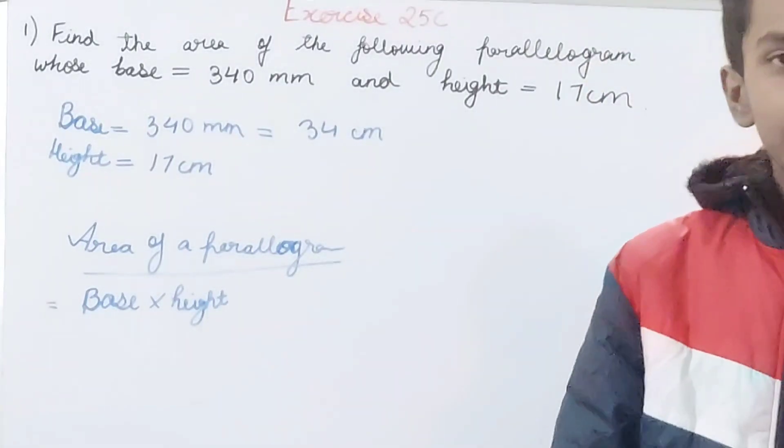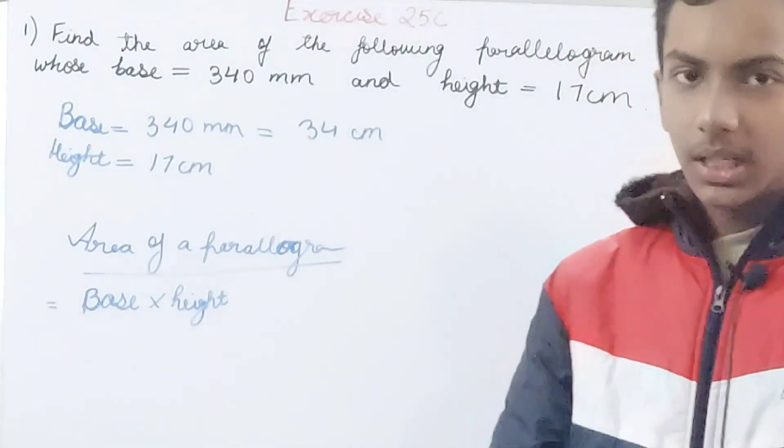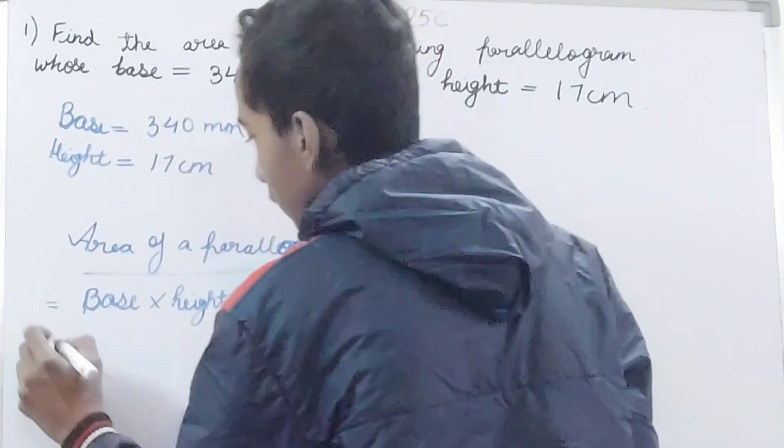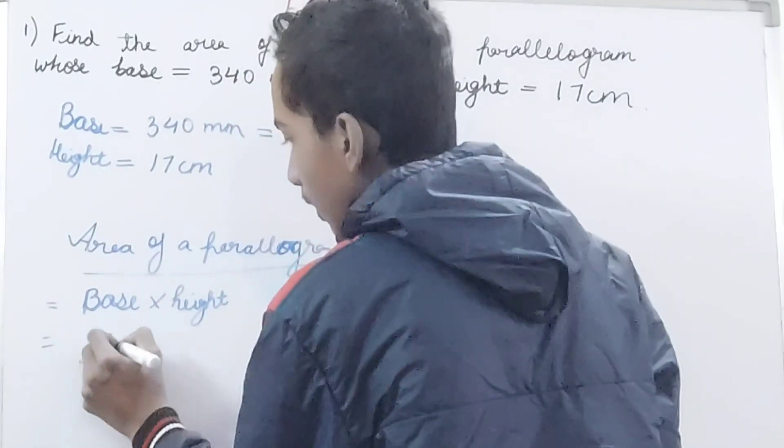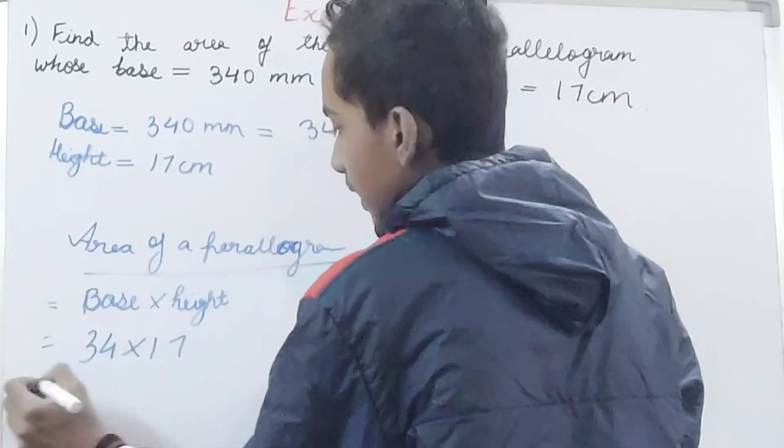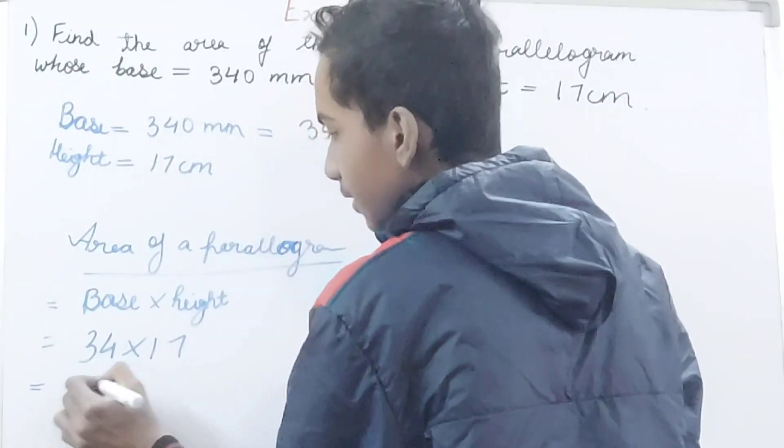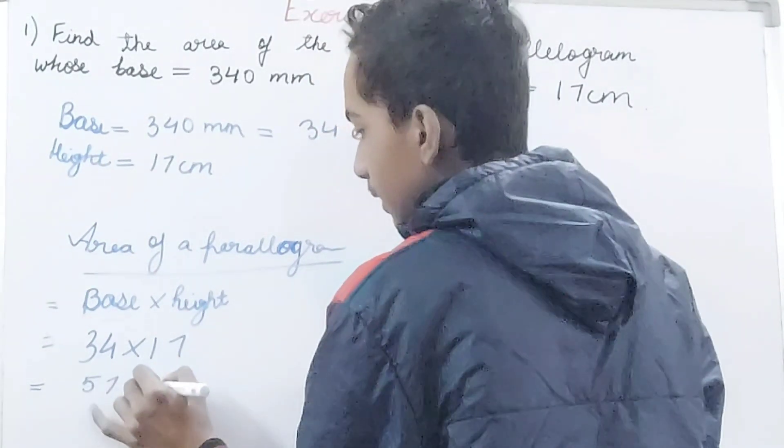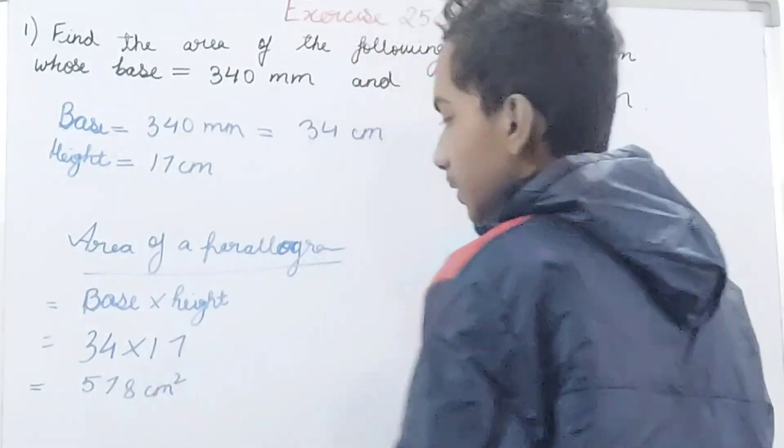Just multiply these two and you will get the area. So we have 34 as the base and height as 17. This is going to be 578 square centimeters.